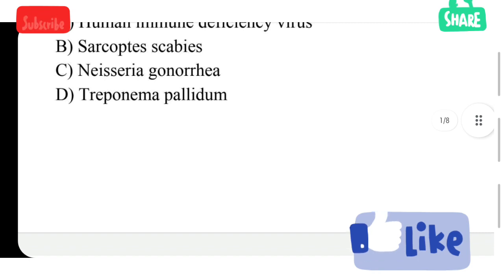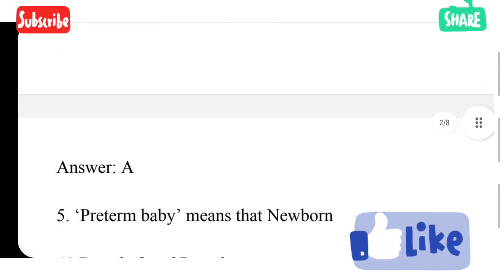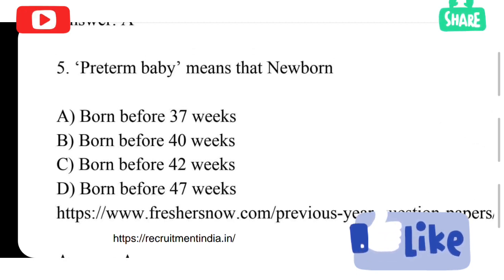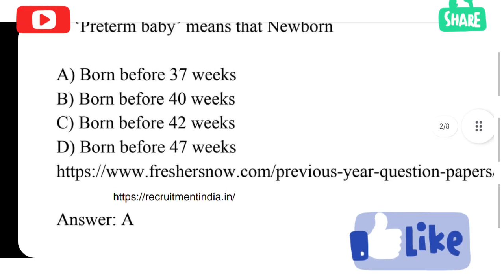Preterm baby means that newborn option A born before 37 weeks, option B born before 40 weeks, option C born before 42 weeks, option D born before 47 weeks. Option A is correct answer.